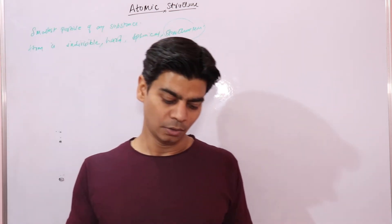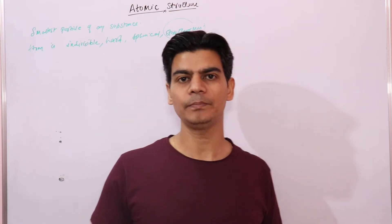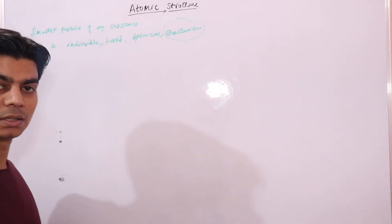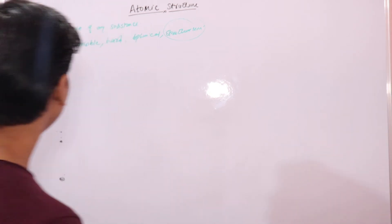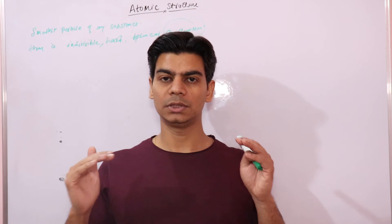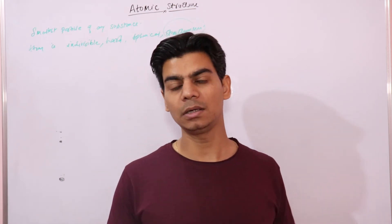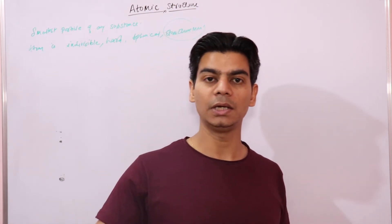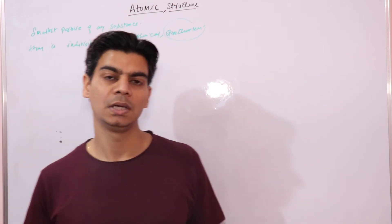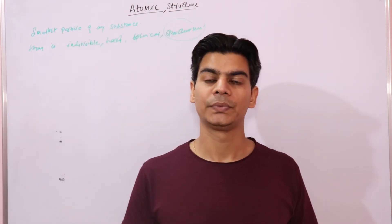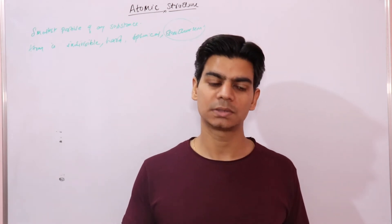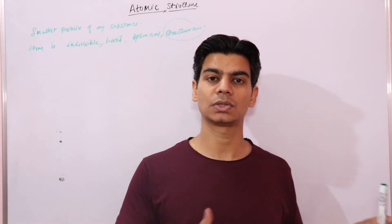John Dalton was a British school teacher who proposed this idea of atom in 1808. Research on the atom and the smallest particle was then continued by famous scientists such as Chadwick, Rutherford, and Moseley, who all continued to do research on the atom.